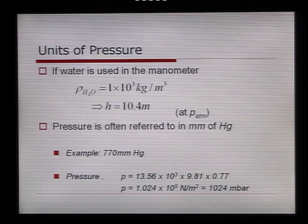So the units of pressure. If water is used in a manometer, we can say that the density, which is a lot lower than that of mercury, is 1 by 10 to the 3 kilograms per meter cubed. Essentially, it's 1,000. The height of the barometer, or the height of the fluid in the barometer, if water was used, would rise to 10.4 meters. That's why we often use mercury to measure such large pressures. So the pressure is often referred to in millimeters of Hg, millimeters of mercury. An example of a typical atmospheric pressure would be 770 millimeters of Hg.